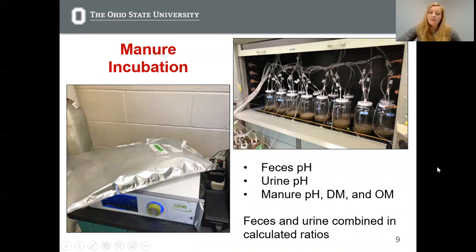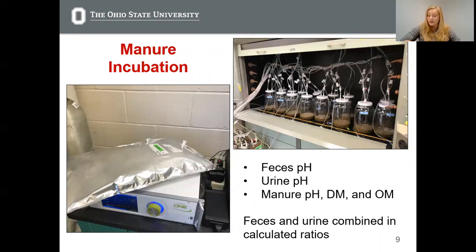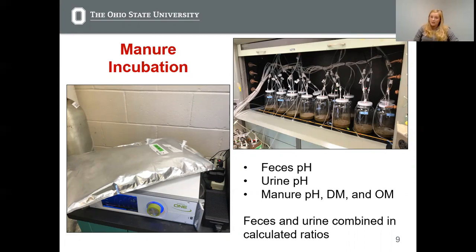Moving on to lab procedures, feeds and feces were examined for chemical composition and digestibility. Secondary samples of feces and urine were collected and retained for manure incubation later on. As you can see here, these are our manure incubation setup. At the start, we measured feces, urine, and manure pHs, as well as dry matter and organic matter of the manure. After the six-day incubation, we measured manure pH again.